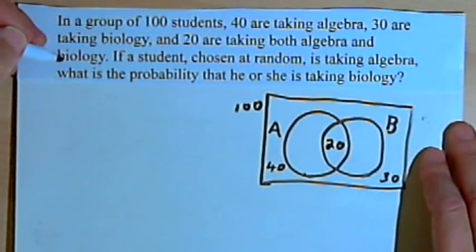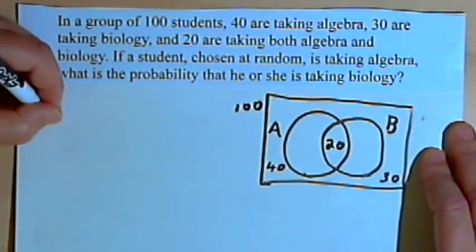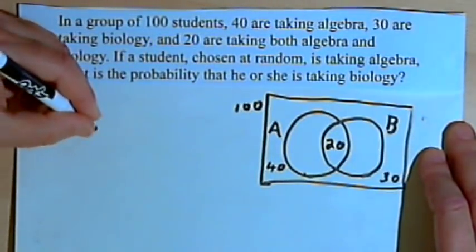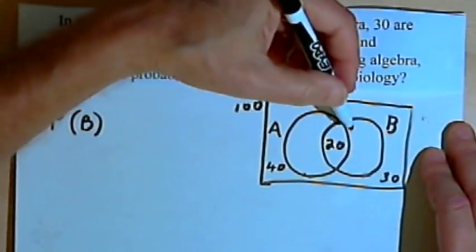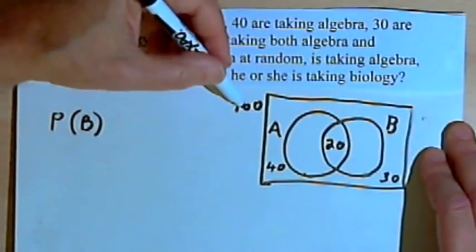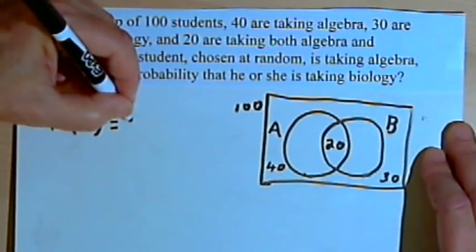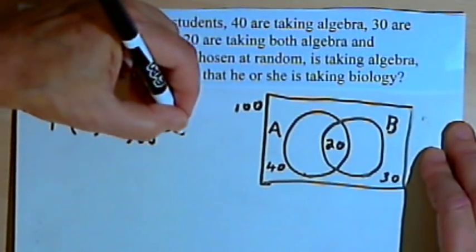Now if the question had only asked you what's the probability that any student chosen at random is taking biology — in other words, what's the probability of B — that would be a fairly simple answer. There are 30 students taking biology and 100 students total, so the probability of B is 30 over 100, or 30%.